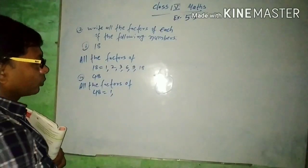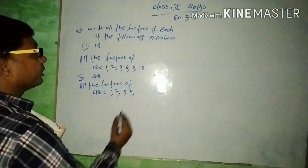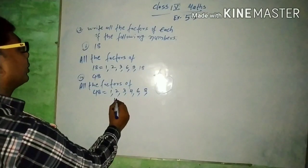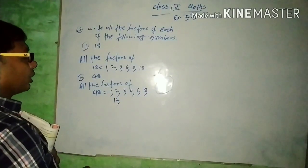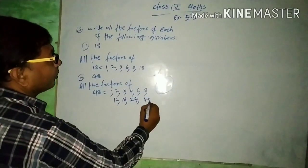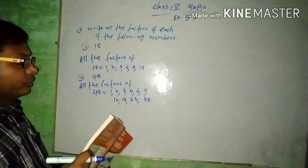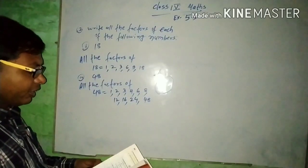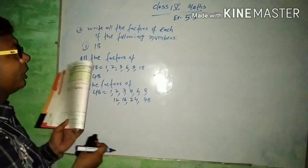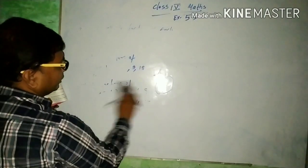For 48, it is divisible by 1, 2, 3, 4, and more. We check which multiplication tables it belongs to and identify all divisors. This is the basis on which we find all the factors. It is quite easy once you understand the method. Now look at the next exercise, 5.4.